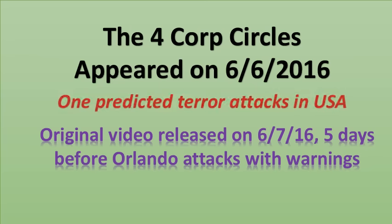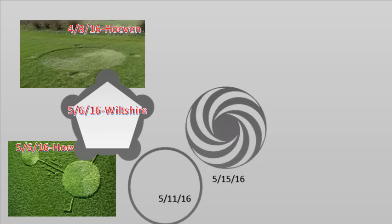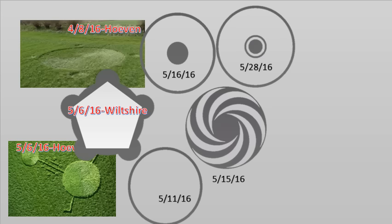The 2016 crop circle season got off to a late start, as the first one appeared on April 9th, then two on May 6th, one on May 11th, then one on May 15th, another one on May 16th, and the last one in May occurring May 28th.